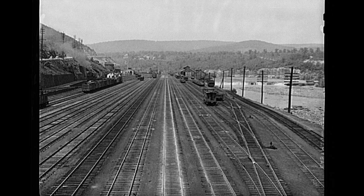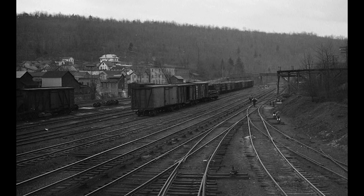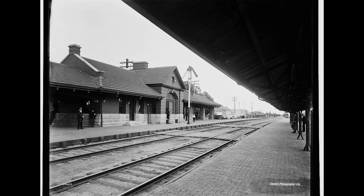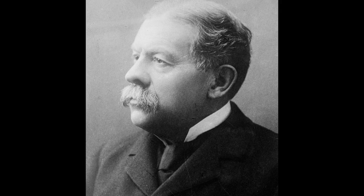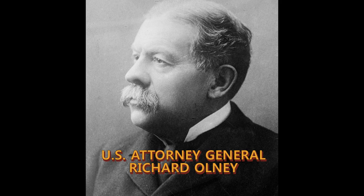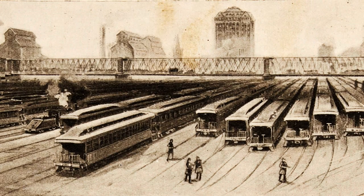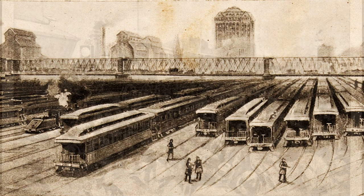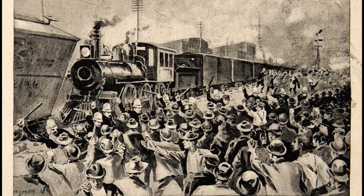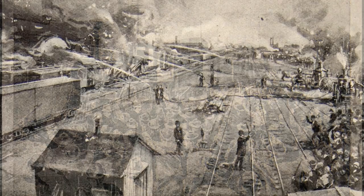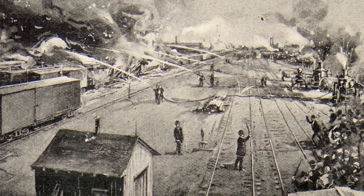They placed mail cars in every train along with Pullman cars. Since it is a federal offense to interfere with the mail, the government would be forced to take action. The U.S. Attorney General, who openly supported the owners, deputized over 3,000 men hired by the railroads to keep the trains running. Clashes broke out between the deputies and workers, and this provided justification for President Cleveland to send in federal troops.